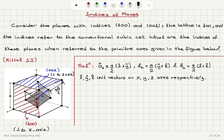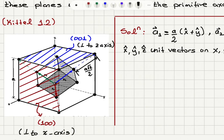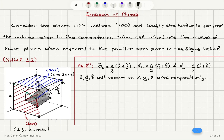The planes we are talking about are (1,0,0) and (0,0,1). We have to recognize what those are. These are planes that will intersect the x-axis and z-axis at one lattice constant a respectively. The (1,0,0) plane runs parallel to the yz-plane — that is the red plane here, perpendicular to the x-axis. The (0,0,1) plane intercepts the z-axis at one lattice constant and runs parallel to the xy-plane, with no intercept on the x and y axes — that is the blue plane.